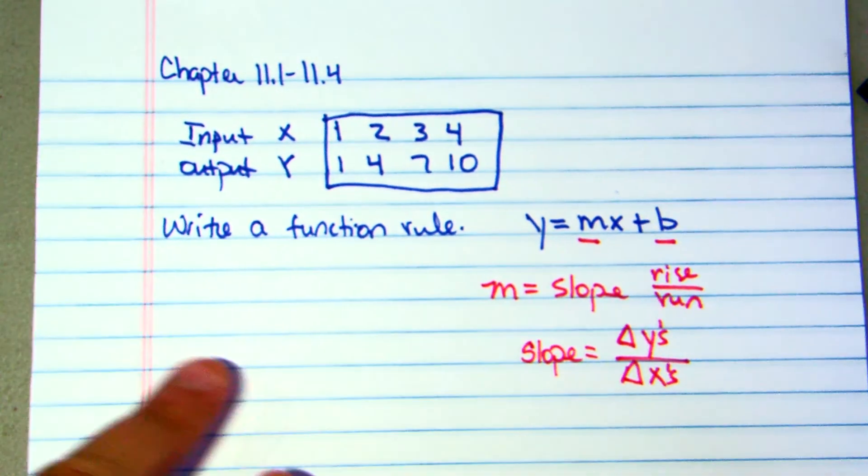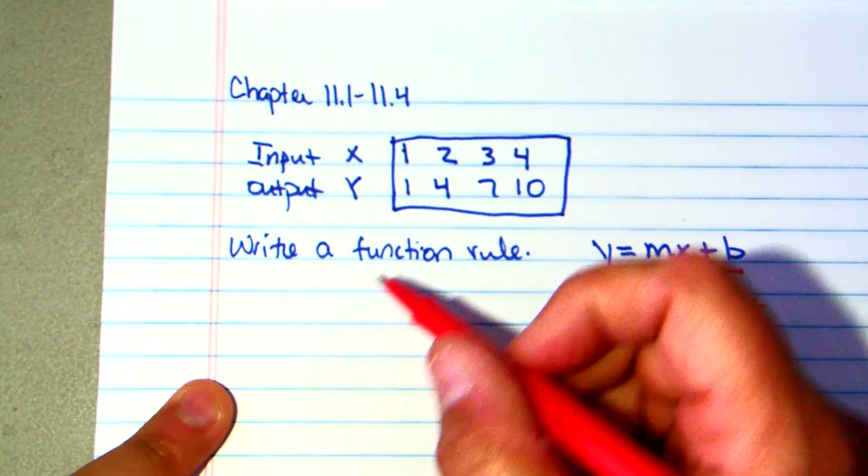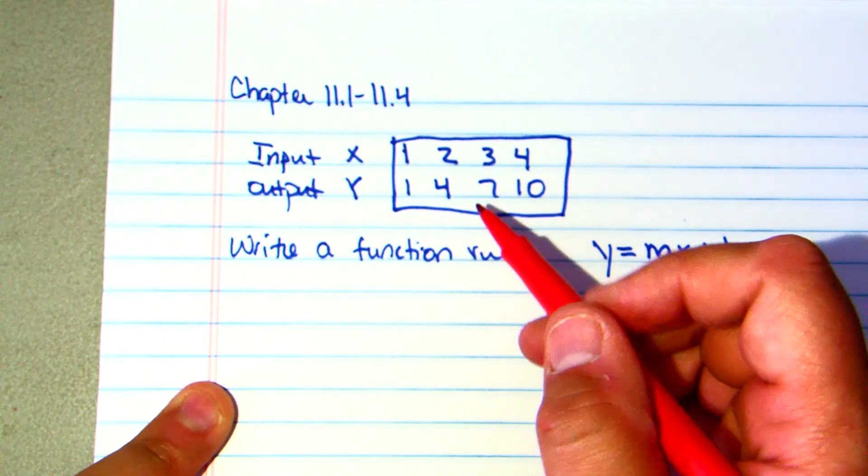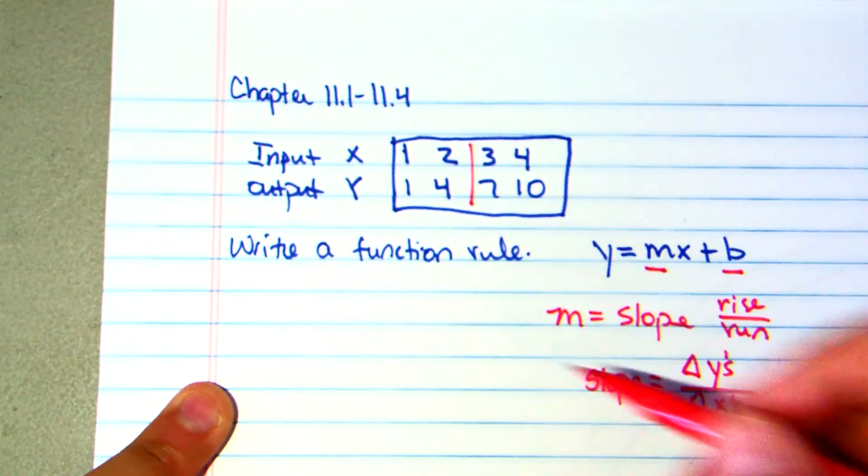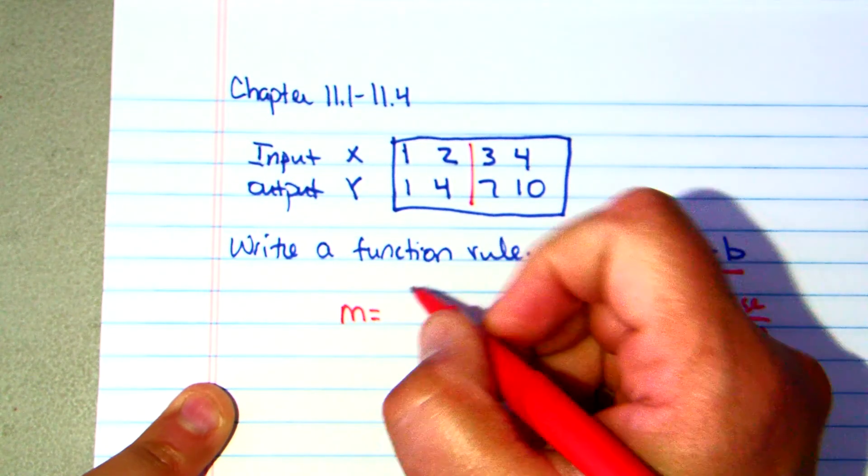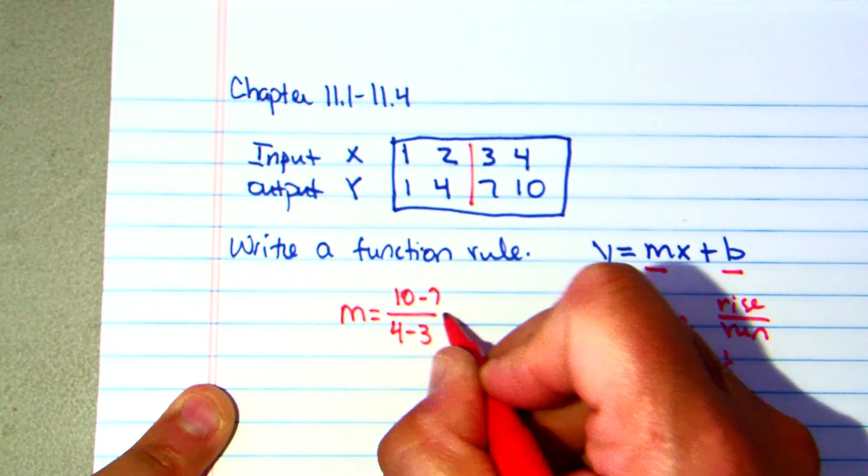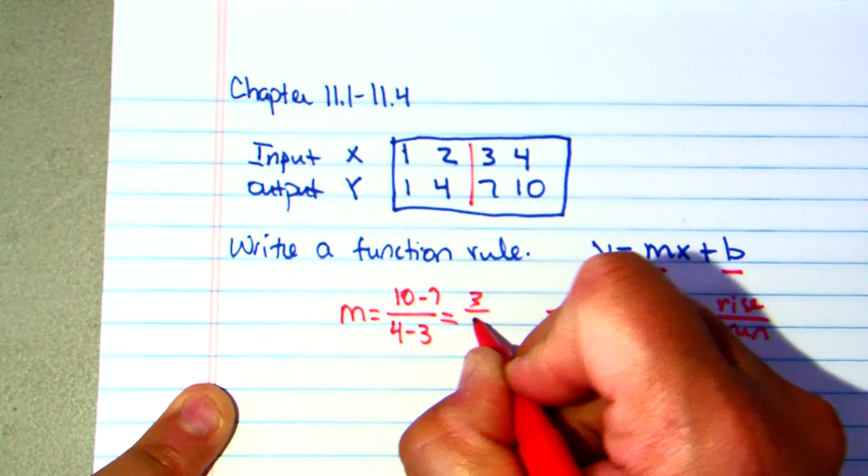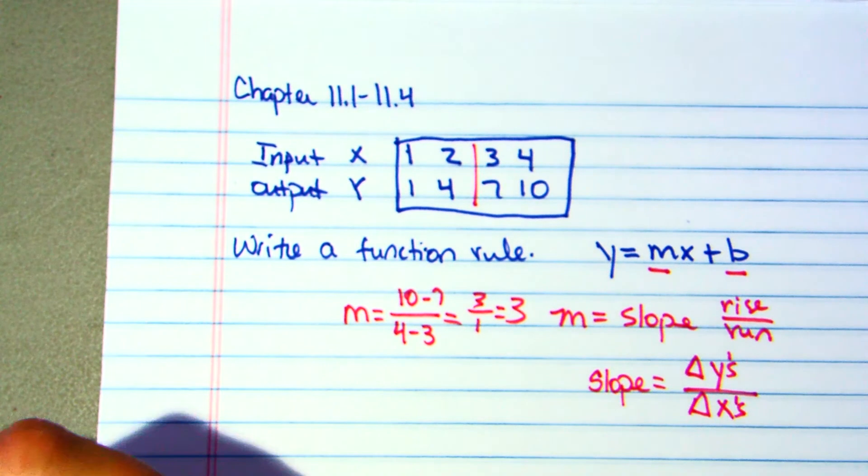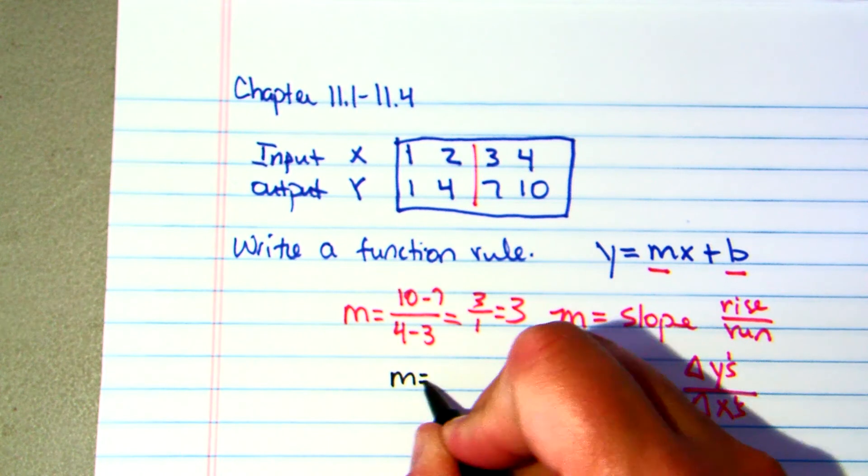So I'm going to go back up here and I'm going to pick two sets or two ordered pairs. Let's go with 10 and 7 and 4 and 3. So I'm going to just kind of block that off so you can see what we're looking at. I'm going to say for slope M is equal to 10 minus 7 over 4 minus 3. And I get 3 over 1 which is equal to 3. So now I know one piece of my information. My slope for my M is 3.